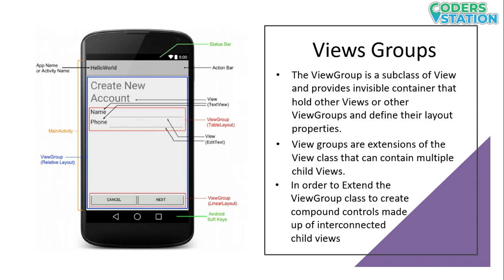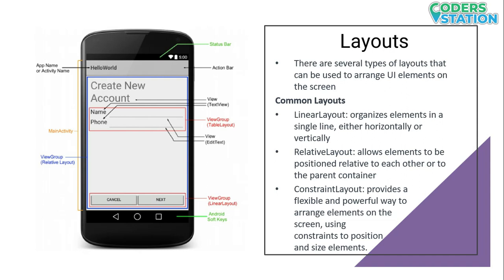The next thing is ViewGroups. If we want to provide formatting on a group of views or perform an operation on multiple views together, we can group those views with a common operation or formatting, and that is done with a ViewGroup. As you can see, name, phone, and the EditText views have been grouped into a single ViewGroup using a TableLayout. Similarly, the two buttons are grouped using a ViewGroup which is a LinearLayout.